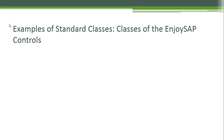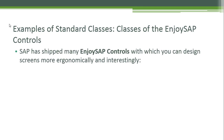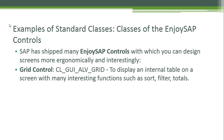An example of standard classes: the classes of the Enjoy SAP Controls. SAP has shipped many Enjoy SAP controls with which you can design screens more ergonomically and interestingly. For example, the Grid Control — the class CL_GUI_ALV_GRID — is the class we were looking at earlier in the system. This class is used to display an internal table on a screen with many interesting functions such as sort, filter, and totals. We have been working with internal tables and now we can display them on screen in a user-friendly way.